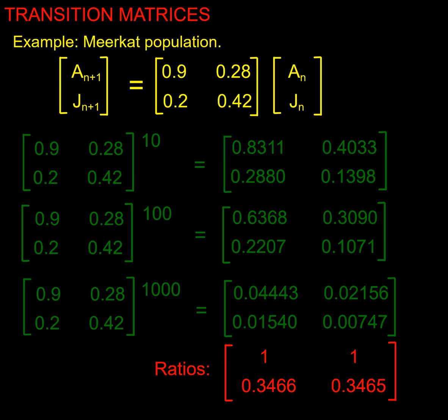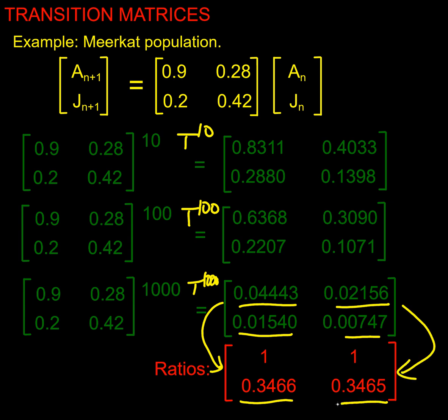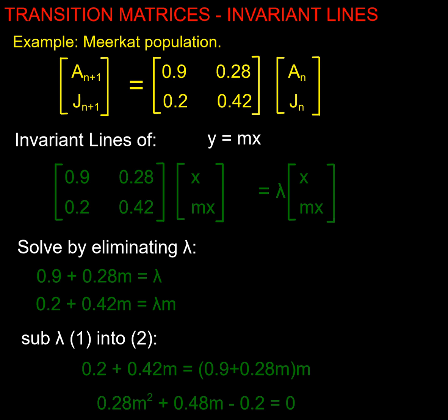Let's have a look at what's happening with our vector multiplication. If I wanted T^{10}, after 10 years I just multiply it out 10 times, T^{100} I'd get that, T^{1000} I'd get that. It's not particularly obvious until I look at the ratios of these two values, which is 1 to 0.346, and the ratio of these two which is 1 to 0.346 - these two ratios are the same.